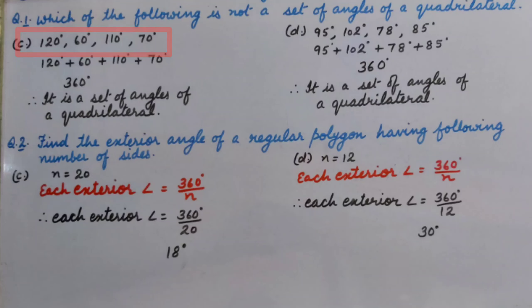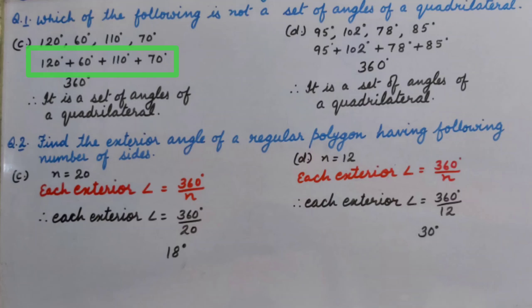Part C: 120 degrees, 60 degrees, 110 degrees, 70 degrees. As we know, the sum of all the angles of a quadrilateral is 360 degrees. So we will add these angles. Their sum is 360 degrees. So it is a set of angles of a quadrilateral.